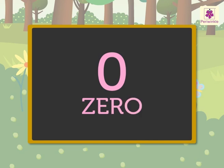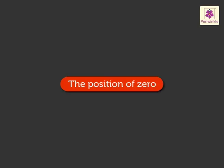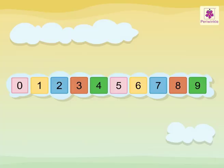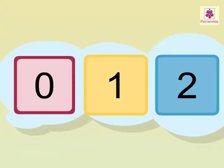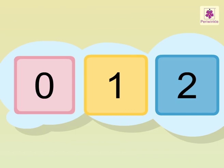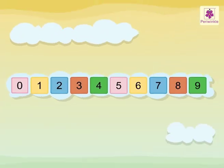You now know what the number zero denotes. But, do you know what is its position? It is written before or after which number. Look at this number strip. The first number written on it is zero. It starts with zero. Zero comes before the number one. When we write numbers from zero to nine, we write zero first.